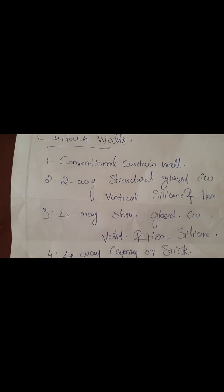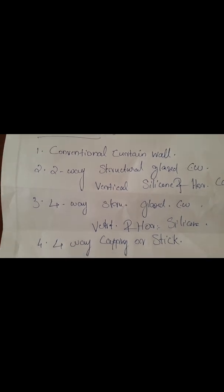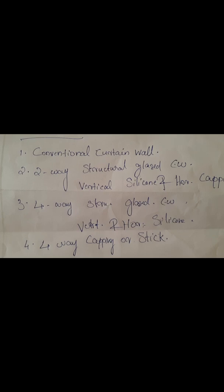Different types of curtain walls: conventional curtain wall, two-way structural glazed curtain wall, four-way structural glazed curtain wall, and four-way capping or stick system. Normal curtain walls are called conventional curtain walls. Two-way structural glazed means in vertical areas silicone is provided and horizontal areas have capping. Four-way structural glazed means both vertical and horizontal use silicone. Four-way capping or stick system means all joints use capping. I will explain capping in detail during the estimation.